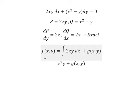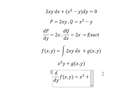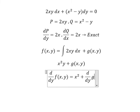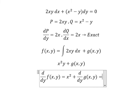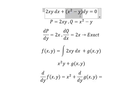Next I will do the first derivative of the function with respect to y for both sides. The first derivative of x²y, we get x². And we know that this equals Q, which is x² minus y.